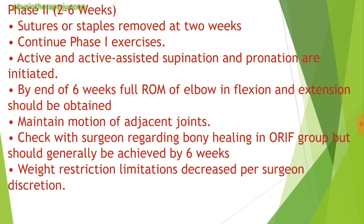At week 6, continue active-assisted and passive range of motion for supination and pronation to full range. Progress the shoulder program and progress elbow strengthening exercises. By the end of 6 weeks, full range of motion of the elbow in flexion and extension should be obtained. Maintain motion of adjacent joints. Check with the surgeon regarding bony healing in the ORIF group, which should generally be achieved by 6 weeks.